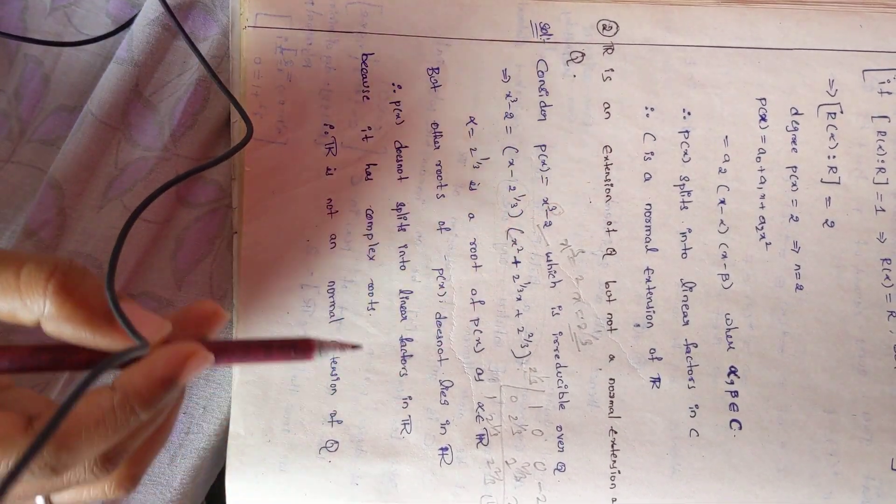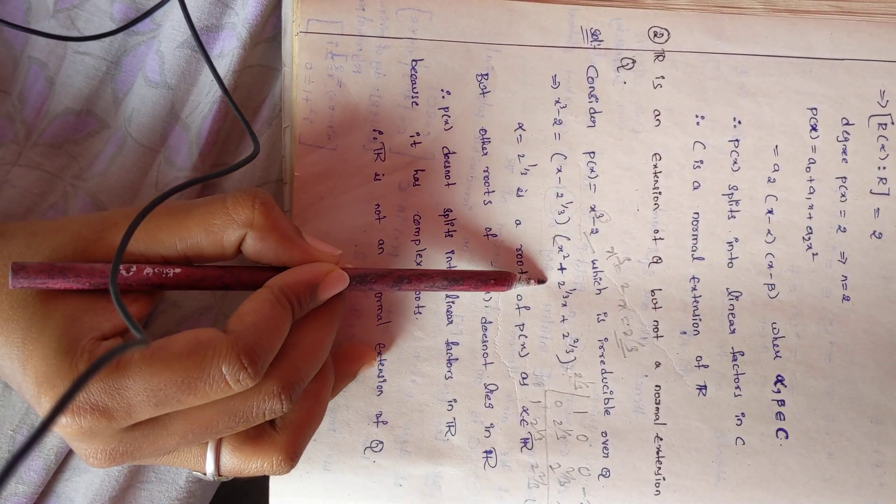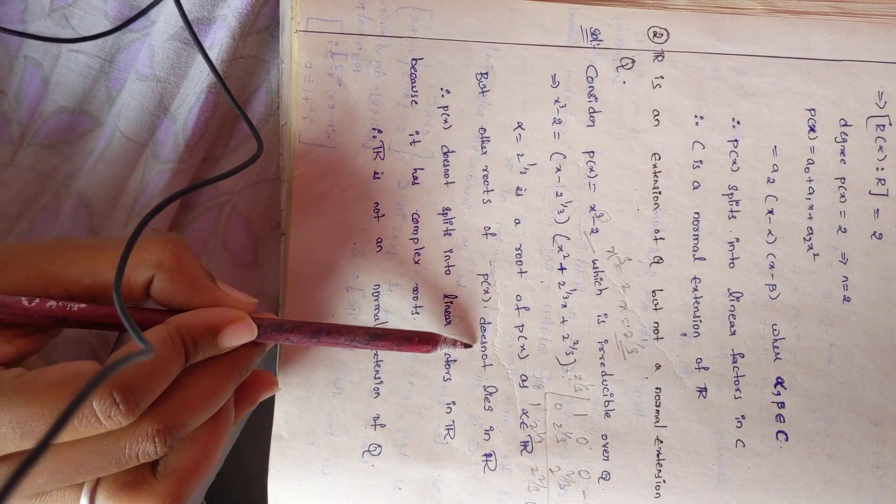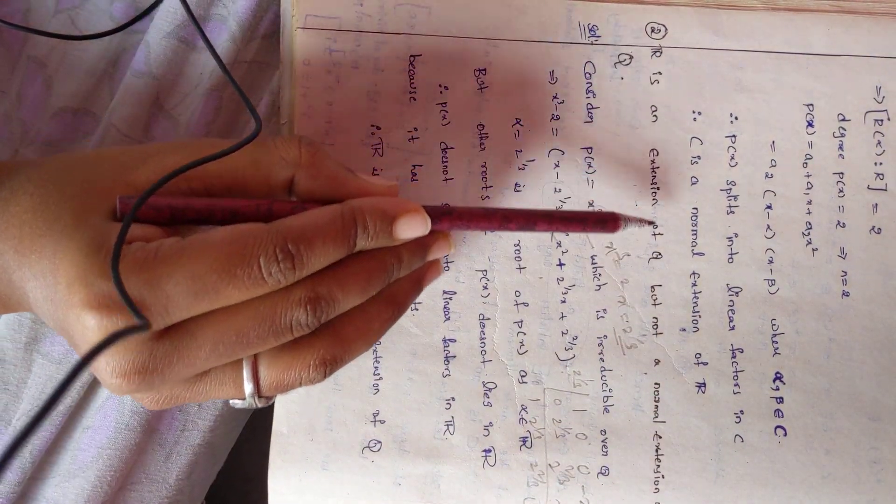Again, one way is that an irreducible polynomial equals linear factors. So other roots of P(X) do not lie in R. Here we have R is an extension of Q.